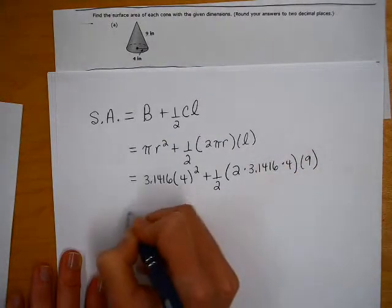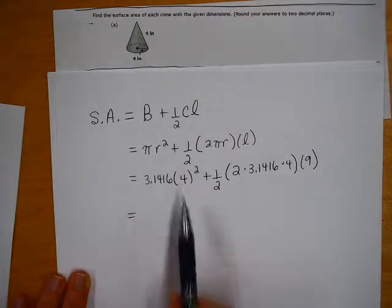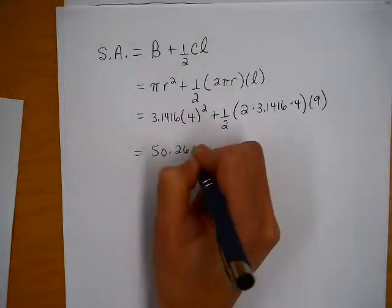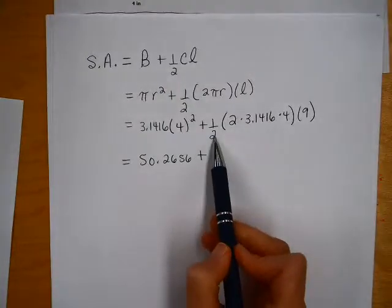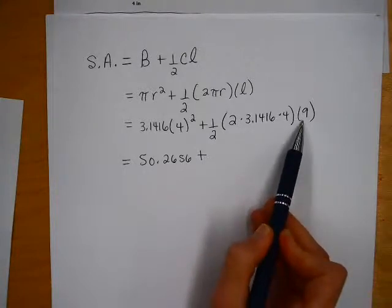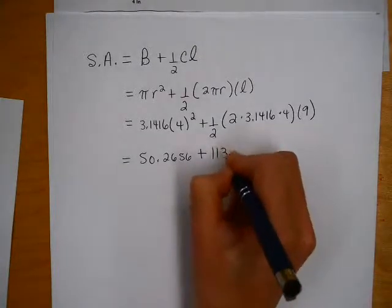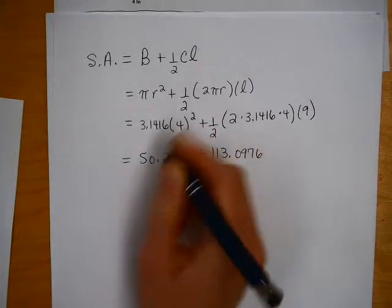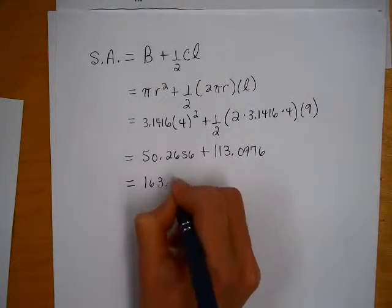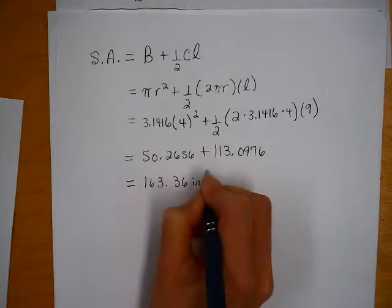So if I type 3.1416 times four squared into my calculator, then I get 50.2656, plus if I do one-half, or 0.5 times two times 3.1416 times four times nine, then I get 113.0976. And if I add those two together, the surface area of that cone would be 163.36 square inches.